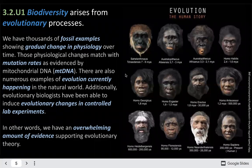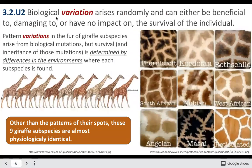Biodiversity arises from evolutionary processes. There's variation amongst individuals; it arises randomly. Sometimes it makes them more fit to survive, other times it could impact their survival, or it could have no impact at all. Here we see some patterns that might not really have any impact on survival — you can see how there's variation based on the different population of giraffes being studied.